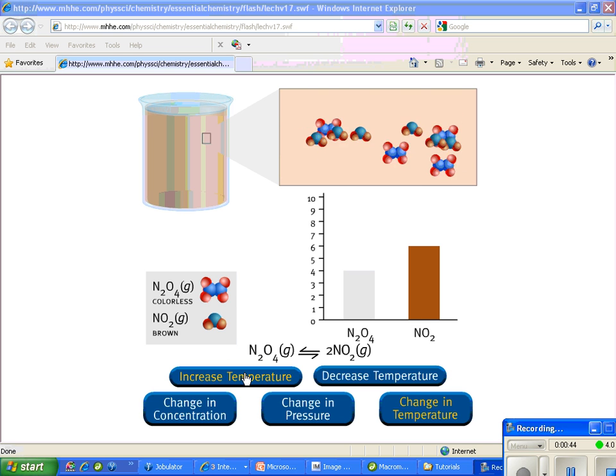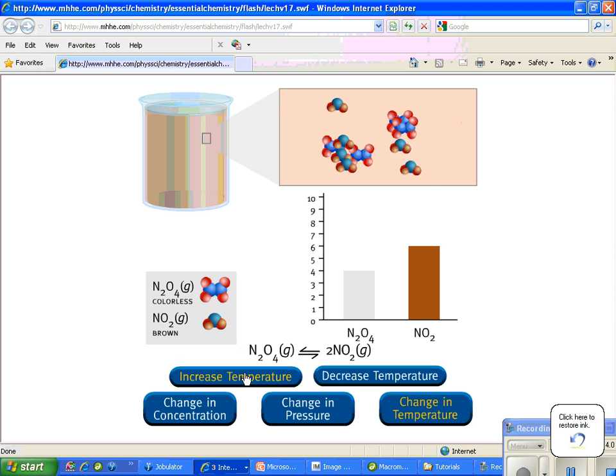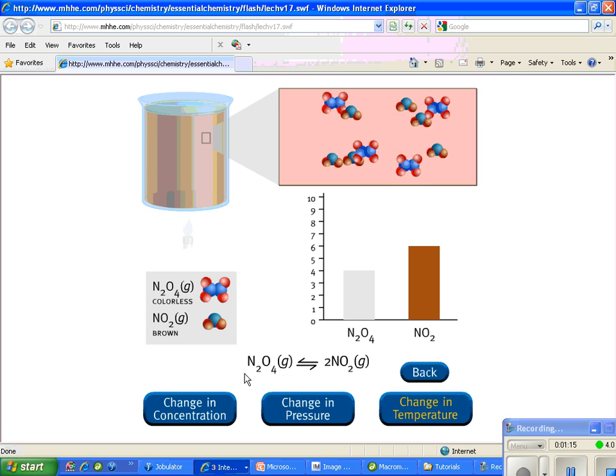So first of all, let's see what the effect is of decreasing the temperature. And in this particular case, you also need to know that heat is treated as a reactant, because this is an endothermic reaction, the way that it's written. So let's increase the temperature, and as we increase the temperature, we are going to see Le Chatelier react to that increase in temperature.